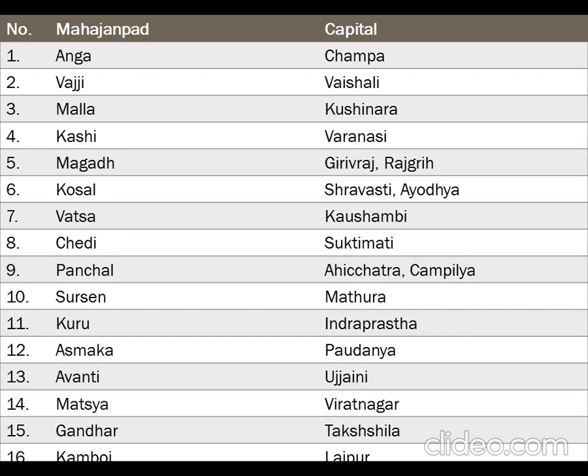First Mahajanpad: Ang, capital Champa. Vajji, capital Vaishali. Malla, capital Kushinara. Kashi, capital Varanasi. Magadha, capital Girivraj or Rajgiri. Kosal, capital Shravasti or Ayodhya. Vatsa, capital Kaushambi. Chedi, capital Sukhtimati. Panchal, capital Kampilya. Sursen, capital Mathura. Kuru, capital Indraprastha.